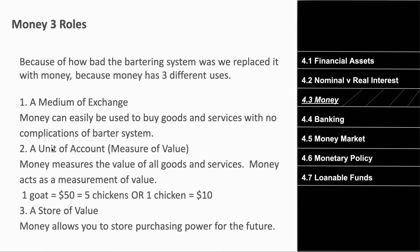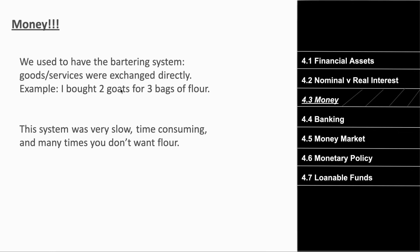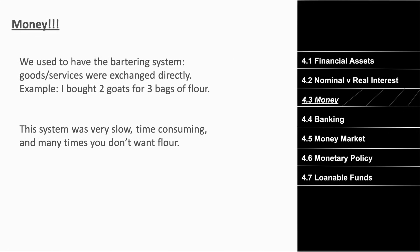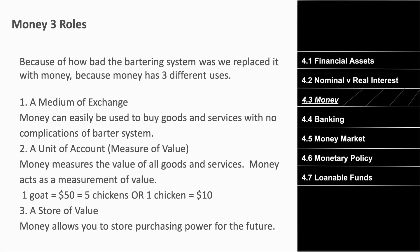Second, money is a unit of account — it measures the value of goods and services. With bartering, we don't know if two goats equals four bags of flour or fifty. But with money, we know one goat is fifty dollars or one chicken equals ten dollars. Money basically measures how valuable an item is.